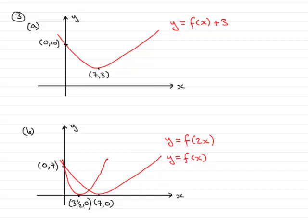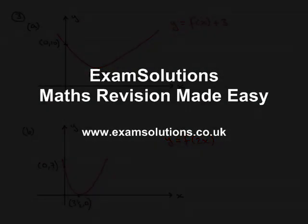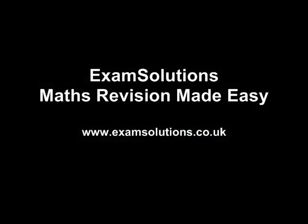And that is our new graph. This then is the graph of y equals f of 2x. Minimum point then, (3.5, 0), crosses the y-axis at (0, 7). And you had to state these points then in the solution. So that brings us then to the end of question 3. Thank you.